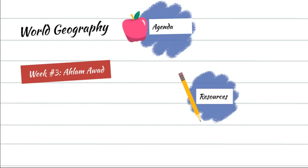We focused a lot on longitude and latitude and the different types of maps that we've learned about, along with using our analysis skills to dissect the key and different maps and cover the five themes of geography.